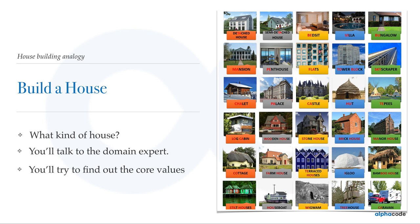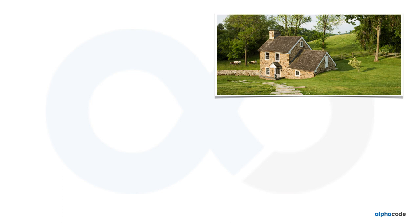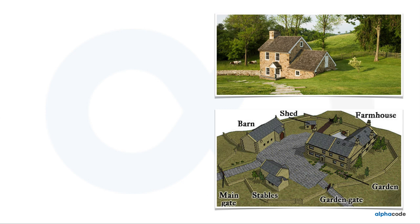After that, you try to find out the core values — what does a farmhouse mean to the owner. He wants it for relaxing, he likes green lawns, he needs security, parties, kids — those are the core values. Then you look at what other people have done: you visit farmhouses the owner finds nice, identify common patterns, and after gathering all that information you create a mental picture of that farmhouse.